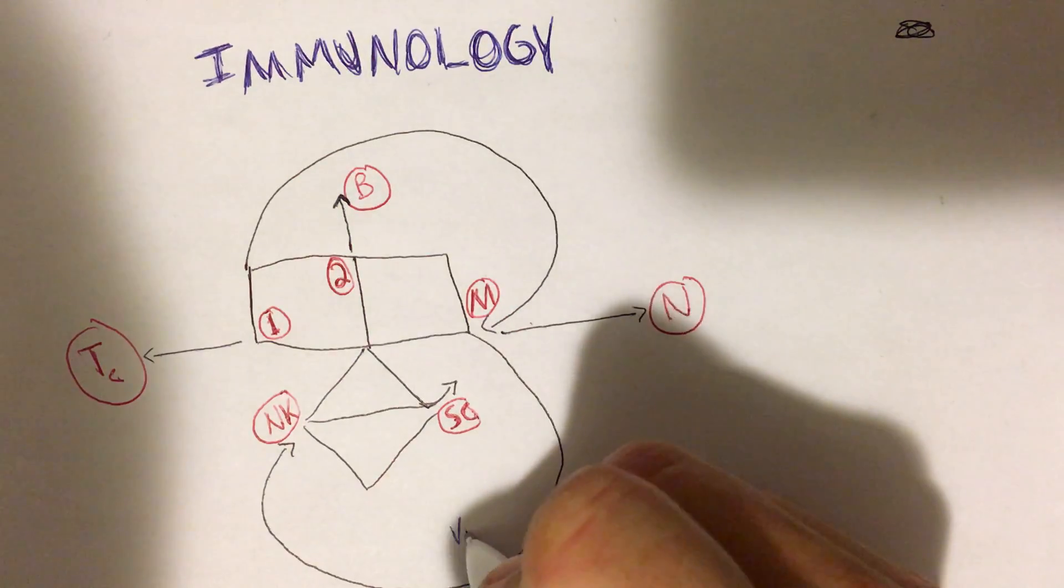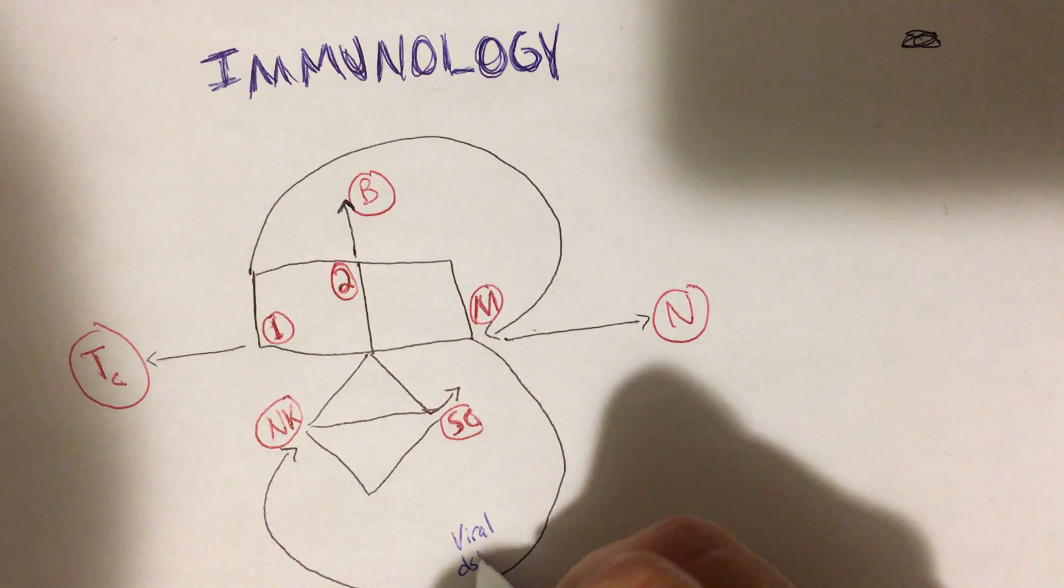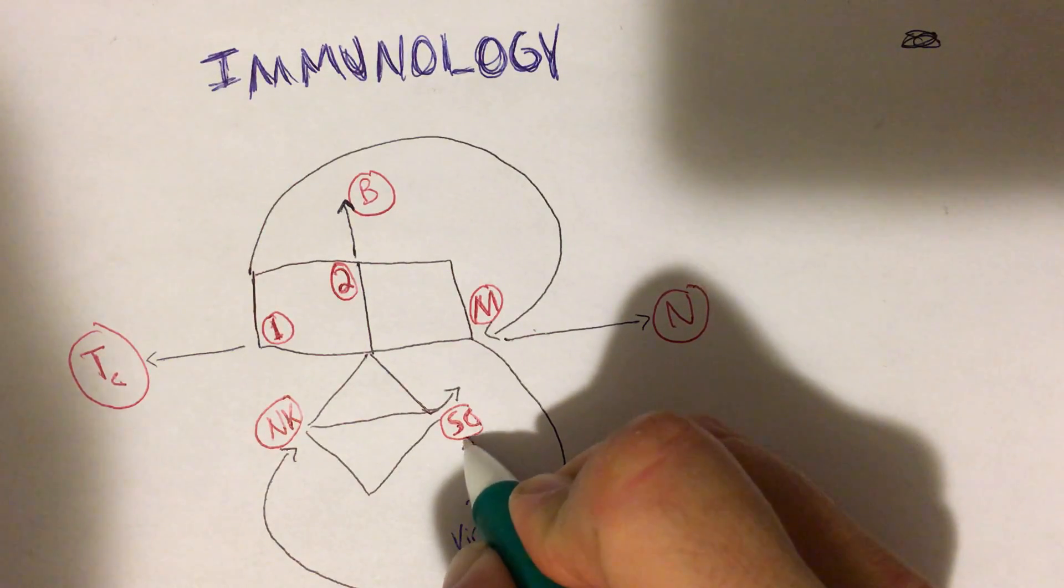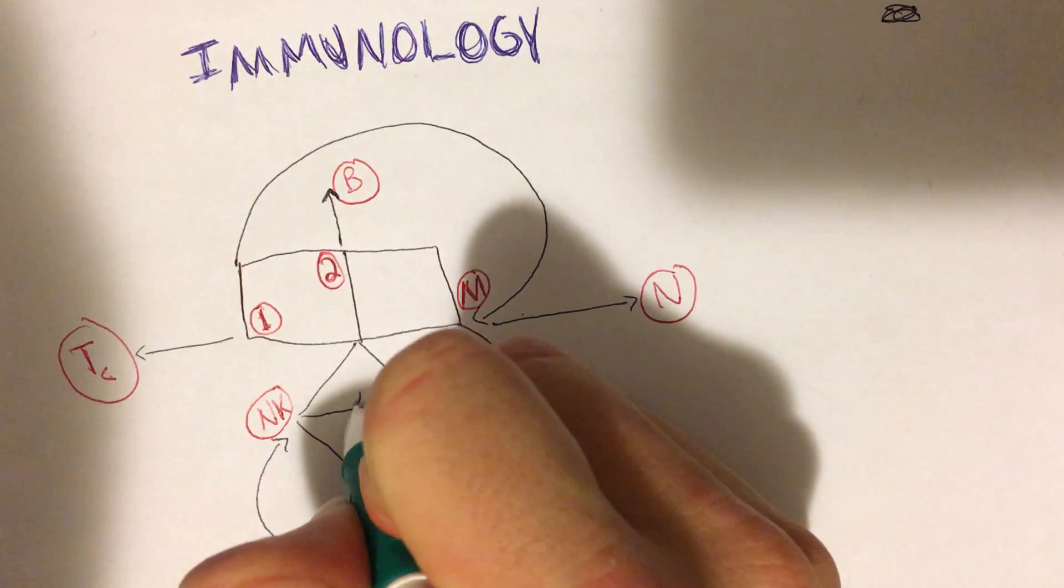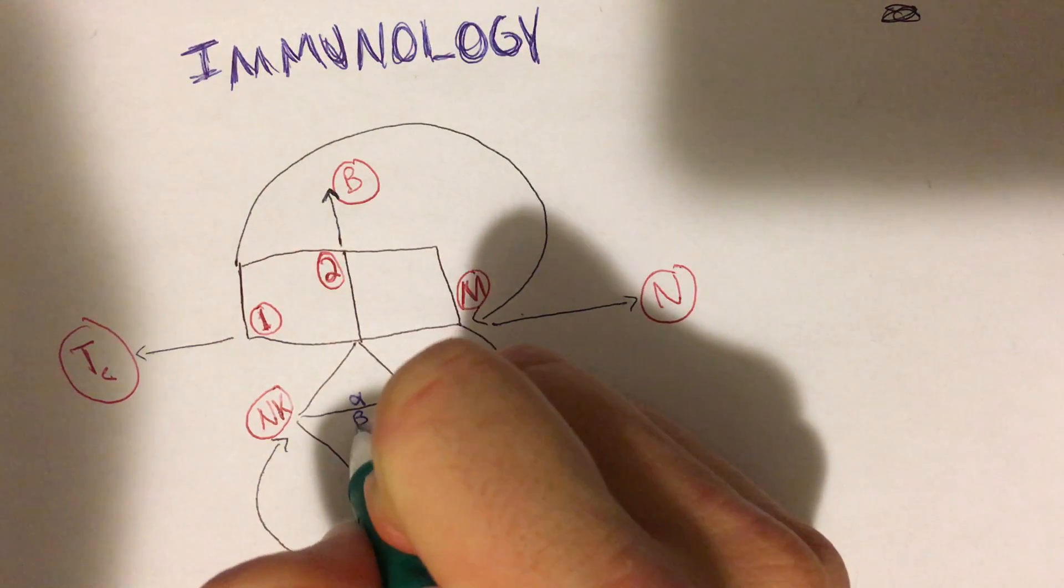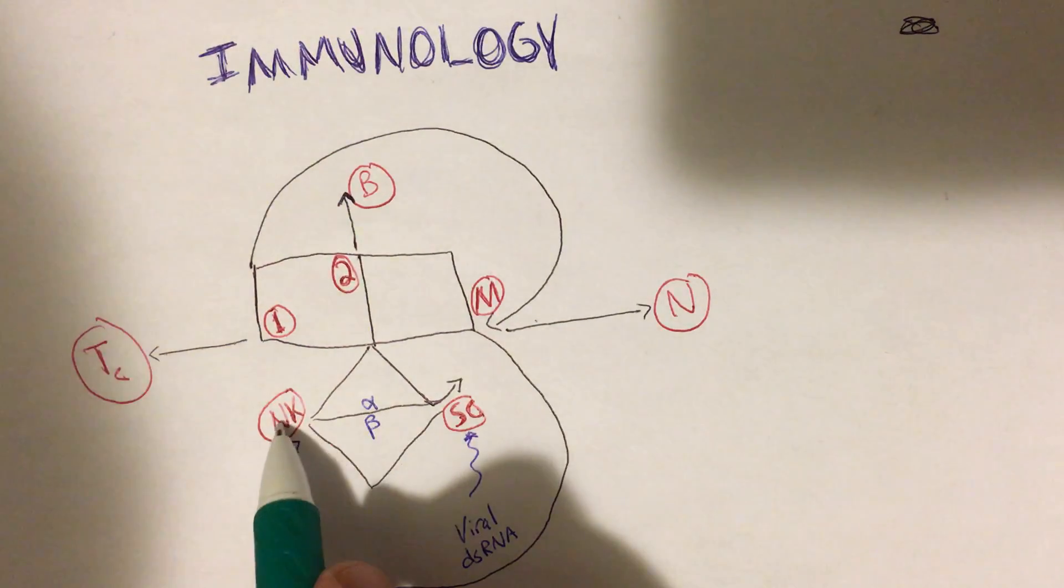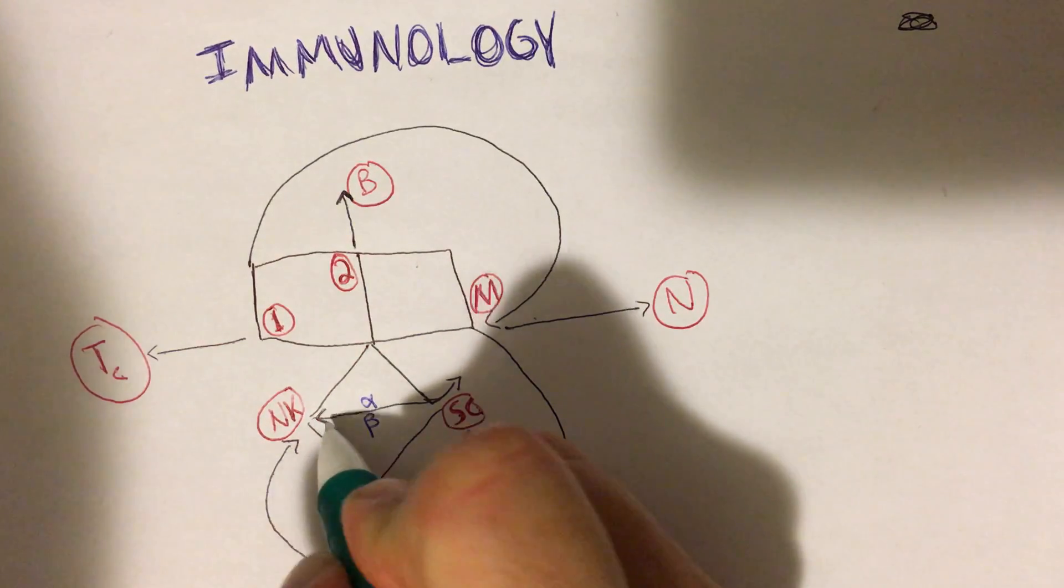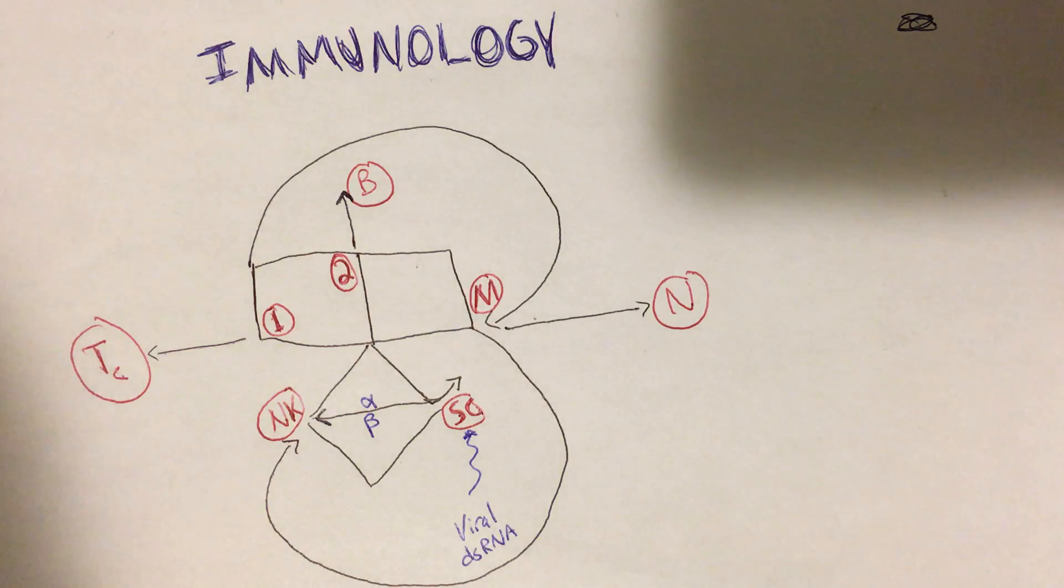The first thing that happens: we're going to have a virally infected somatic cell, so there's going to be this double-stranded RNA. It's going to be sensed in the somatic cell and the first thing it's going to do is offload interferon alpha and beta. I'm just going to forego the IFN - just interferon alpha and beta - and it's going to tell that to the natural killer cell here. So we're going to put a little arrow there.